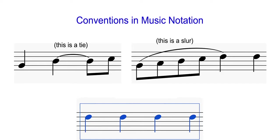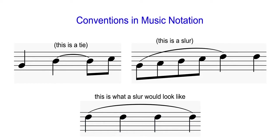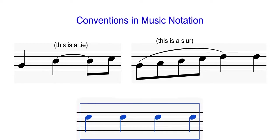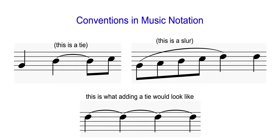Suppose you select four notes and put a slur over them by pressing the letter S — this is exactly what you'd see. Now, if you put a tie over these four notes, a tie only connects a note with the adjacent note that is the same. When you put a tie over more than two notes, you have separate ties from one note to the next and the next and so on.